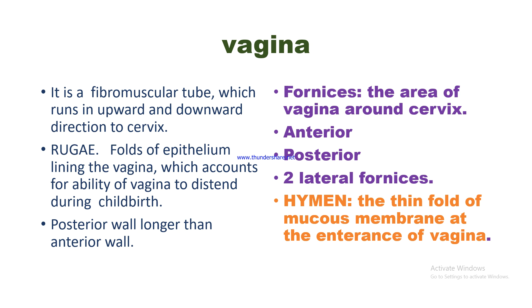The vagina is a fibromuscular tube running upward and backward to the cervix. Because of its position, fornices — the area of the vagina around the cervix — are formed: anterior, posterior, and two lateral fornices. Rugae are folds of the epithelium lining the vagina, which account for the ability of the vagina to distend during childbirth. The posterior wall is longer at 9 cm, while the anterior wall is 6 cm.